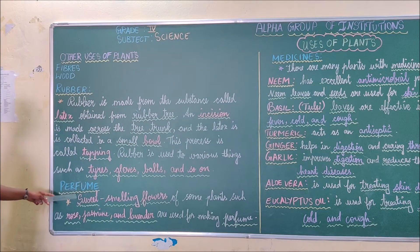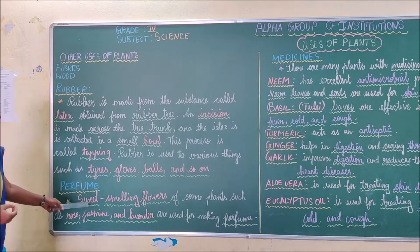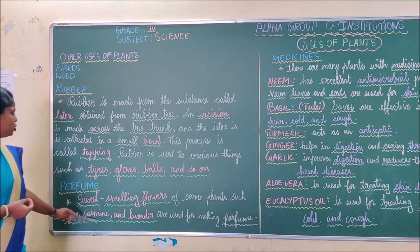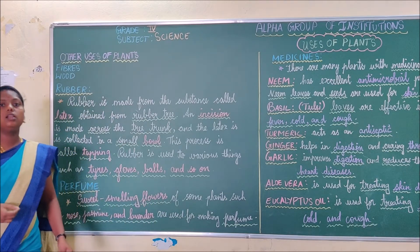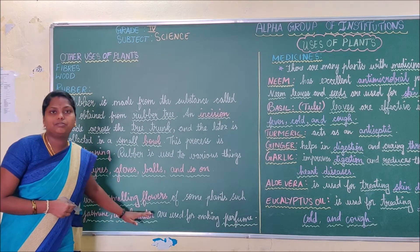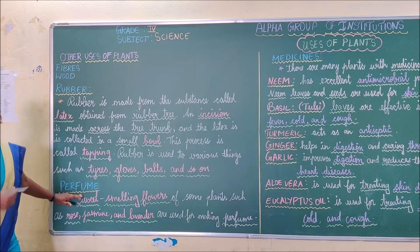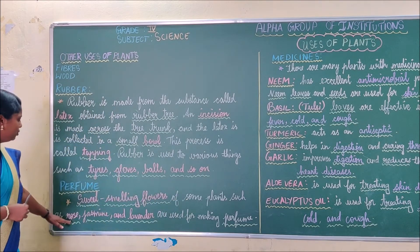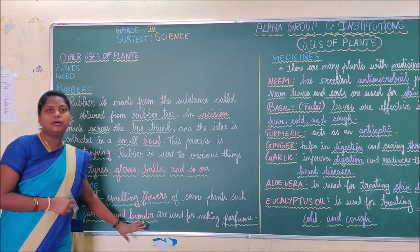The next topic is perfume. Perfume is a good-smelling essence. Sweet-smelling flowers of some plants such as rose, jasmine, and lavender are used for making perfumes. We extract the fragrance from these flowers, which gives a nice smell.